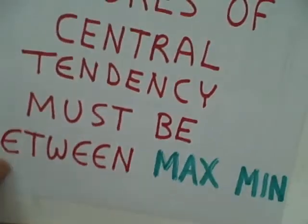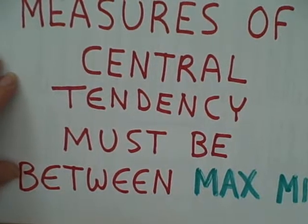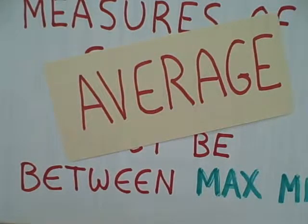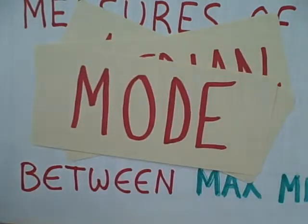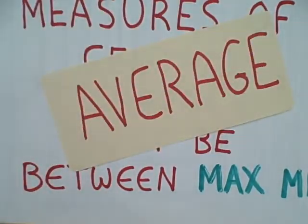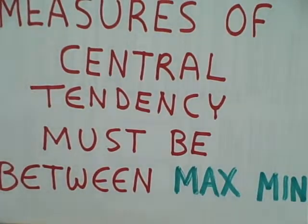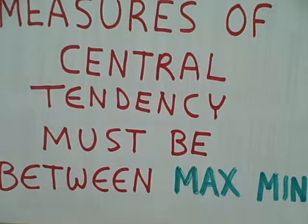The reason why we want to have the range is it serves as a great error checker of all of your other descriptive statistics. For example, you're going to be calculating measures of central tendency — what we call averages — and those averages involve the mean, the median, and the mode. All three of those measures of average — the mean, the median, and the mode — must be between the maximum score and the minimum.